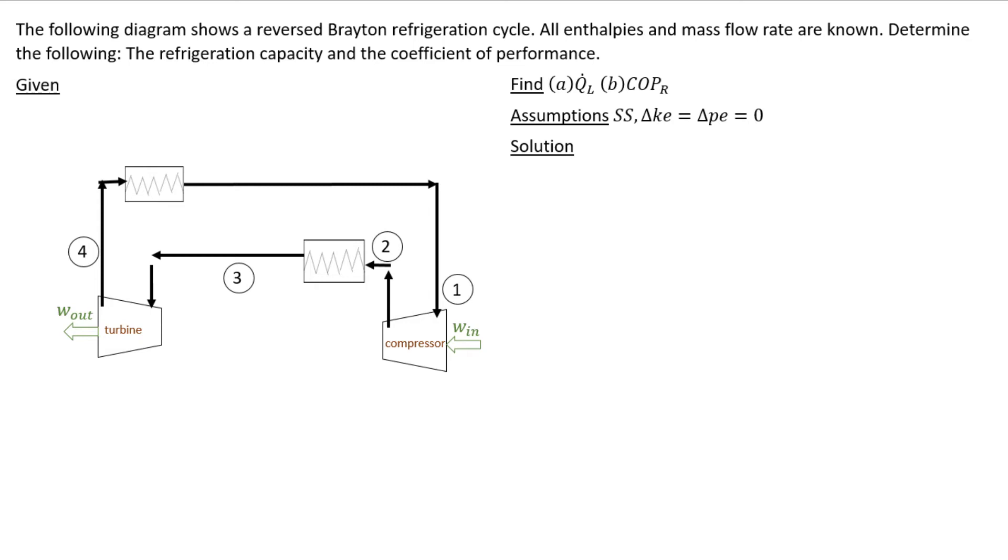Alright, so we've got a reverse Brayton refrigeration cycle. Let's say we know H1, H2, H3, H4. We want to find the refrigeration capacity and the coefficient of performance.